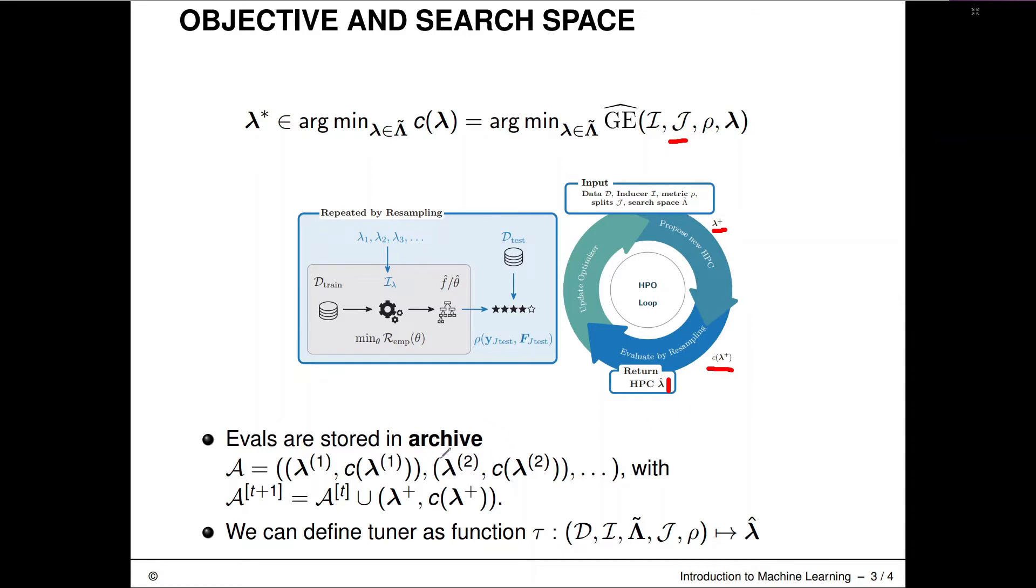Evaluations are usually stored in what we call an archive. So that's also nothing too fancy. So this is just all of the configurations and the associated cost values that we've evaluated. We put them in there so later on we can potentially analyze them or for partial archives. This is also what our optimizer would act on and where it can hopefully draw information from. And I use this curly A here as a symbol for the archive. And we're using that index T here over time for usually for iterations of the optimizer. We can also define our tuning algorithm now as a mapping from a data set, from an inducing algorithm, from search space, resampling strategy and performance metric rho to such an output configuration. And that's kind of a nice little abbreviation for that complex beast here that we just described.